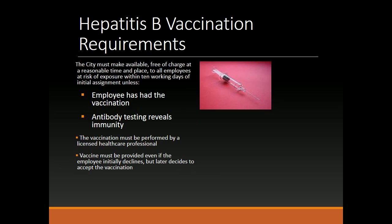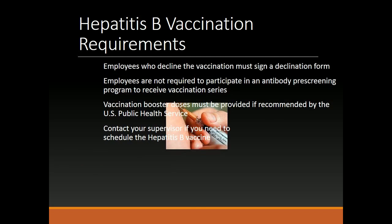Hepatitis B Vaccination Requirements. The employer must make the vaccine available, free of charge, at a reasonable time and place, to all employees at risk of exposure within 10 working days of initial assignment — unless the employee has had the vaccination or antibody testing reveals immunity. The vaccination must be performed by a licensed healthcare professional. Vaccine must be provided even if the employee initially declines but later decides to accept. Employees who decline must sign a declination form. Employees are not required to participate in an antibody pre-screening program to receive the vaccination series. Vaccination booster doses must be provided if recommended by the U.S. Public Health Service. Contact your supervisor to schedule a Hepatitis B vaccine.